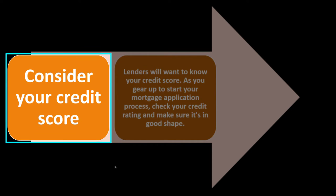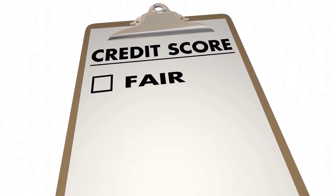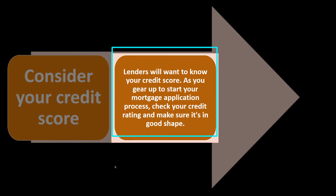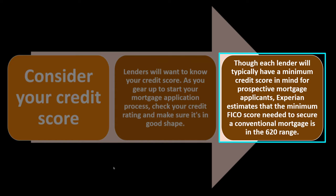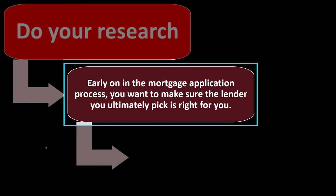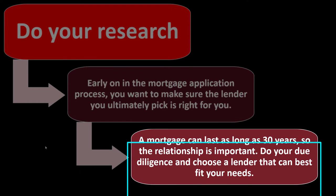Your credit score is going to be important to get the best deal on lending. Lenders will want to know your credit score as you gear up to start your mortgage application. Check your credit rating and make sure it's in good shape. If there's substantial time before buying and you have the capacity to improve your credit score, look into doing so. Experian estimates that the minimum FICO score needed to secure a conventional mortgage is in the 620 range. Do your research early on, because a mortgage can last as long as 30 years, so the lender relationship is important. Do your due diligence and choose a lender that can best fit your needs.